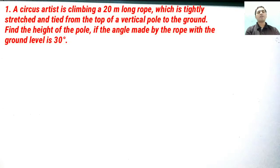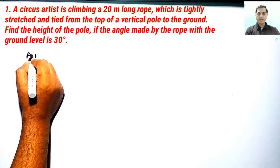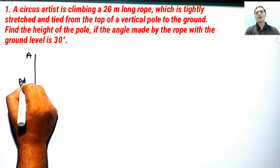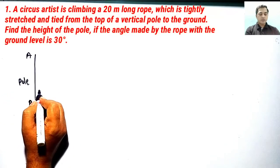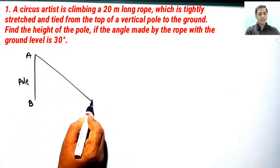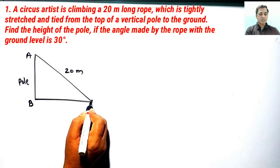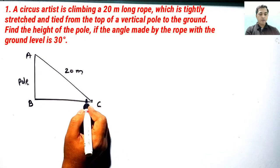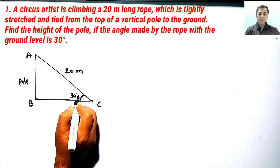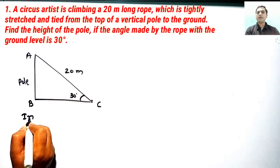Let us see the solution. Considering AB is the height of the pole, its value is unknown. We have to find out the height of the pole. From the fixed point C on the ground, the rope AC is tied and its length is 20 meters. The rope makes a 30 degree angle with the horizontal line. AB is unknown and AC is known, and angle C is known.